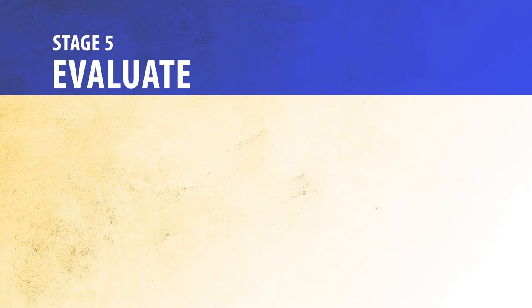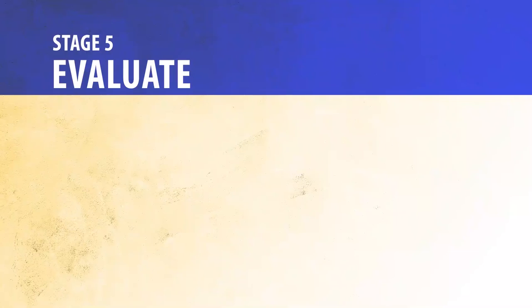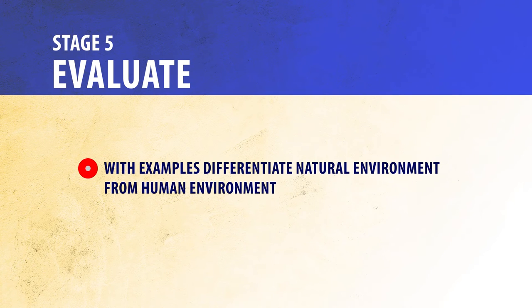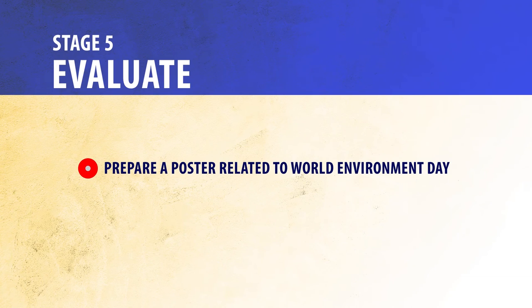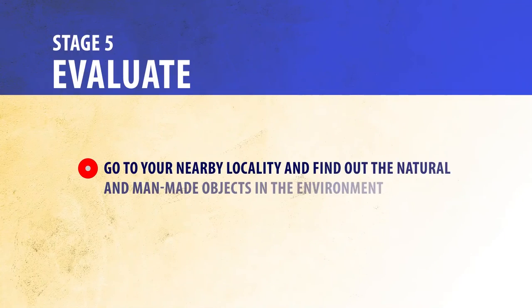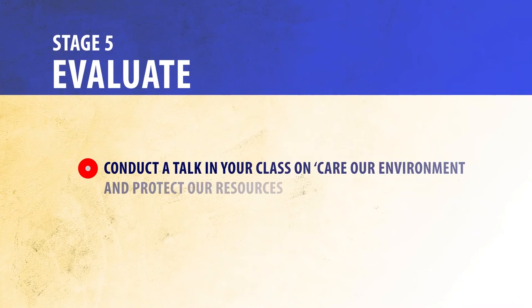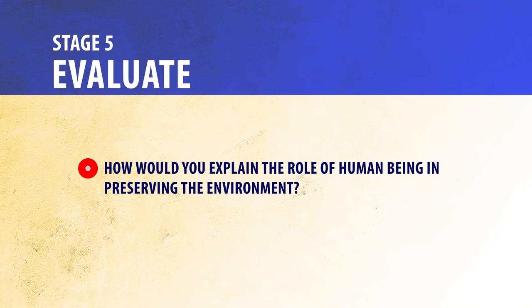Then comes the next E, Evaluate. The teacher evaluates with respect to the behavioral objectives framed in the first window. Students are asked to differentiate natural environment from human/man-made environment with examples. They will prepare a poster related to World Environment Day as an individual activity. They can also go to a nearby locality and find out the natural and man-made objects in the environment — this could be individual or group activity. Students also conduct a talk in class on caring for and protecting the environment — a collaborative activity where students talk in groups and share views.